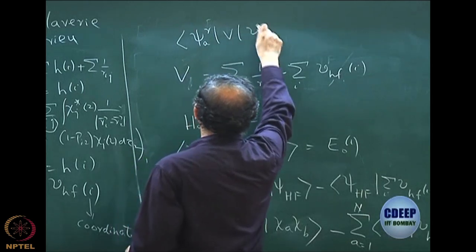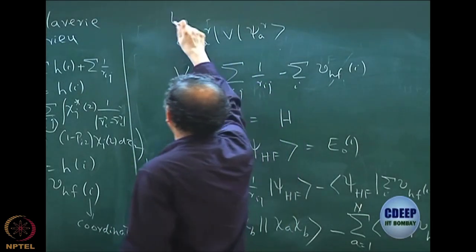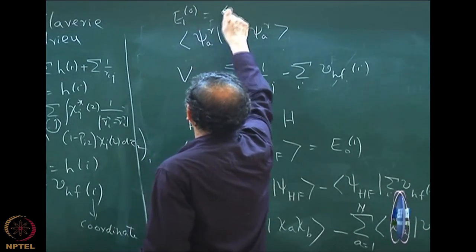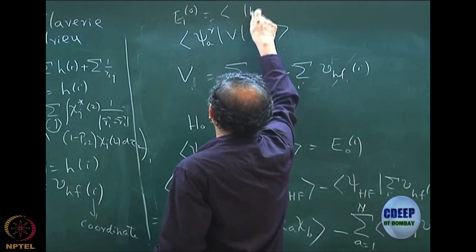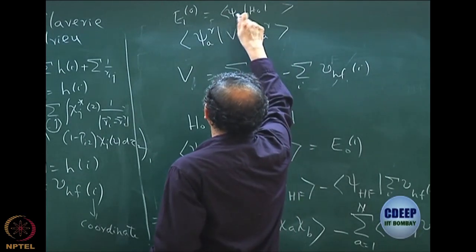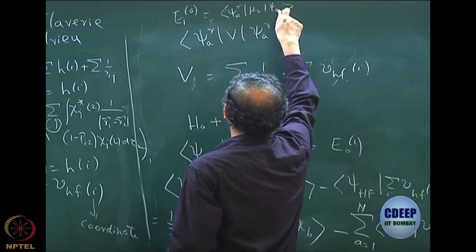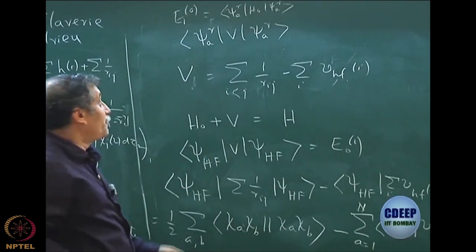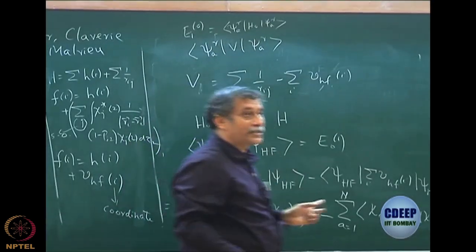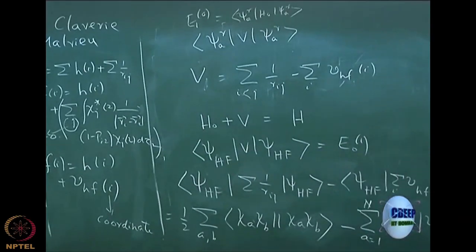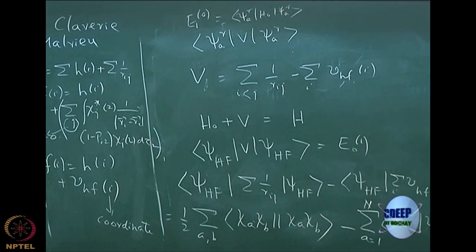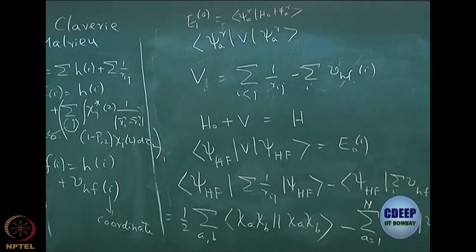Using a singly excited determinant psi^a_r as an approximation to an excited state would be very bad, because who told you that this is a good approximation to the excited state? We only discovered that for the ground state, Psi Hartree-Fock is a good approximation — the variational method and the upper bound theorem only give the ground state.